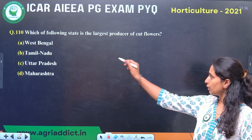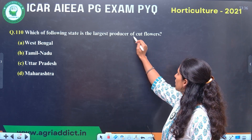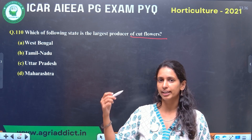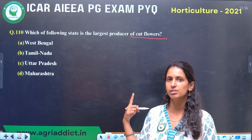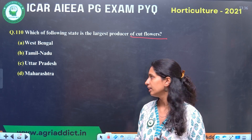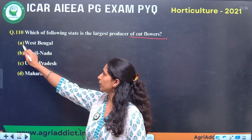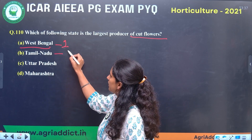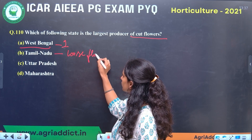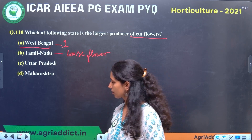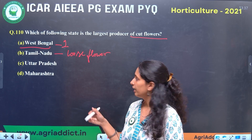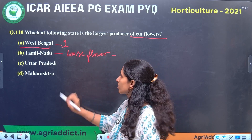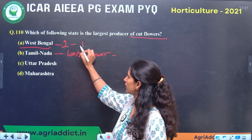Next question: which of the following state is the largest producer of cut flowers? In horticulture, you should go through the current status of top producing countries and states for different crops. In cut flowers, West Bengal is the top producer. In case of loose flowers, Tamil Nadu is number one. Tamil Nadu is the top producer of jasmine and chrysanthemum, while West Bengal mainly grows roses.